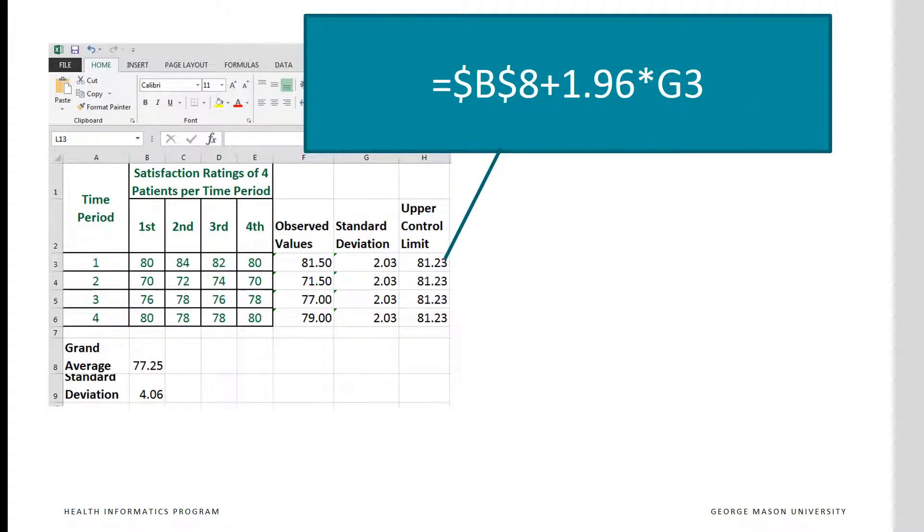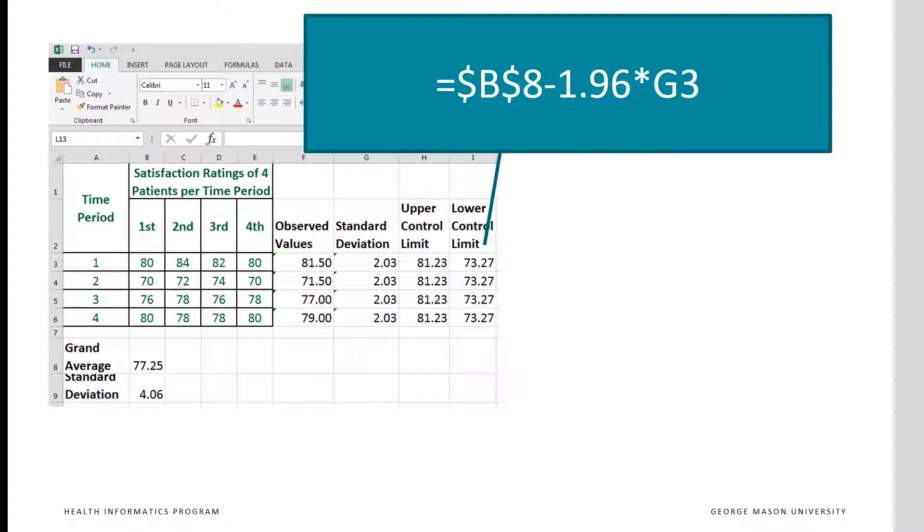Upper control limit is the grand average. Again, we put a dollar sign so it doesn't change when we copy it. Plus 1.96 times the standard deviation for the time period. Lower control limit is the grand average minus 1.96 times the standard deviation.